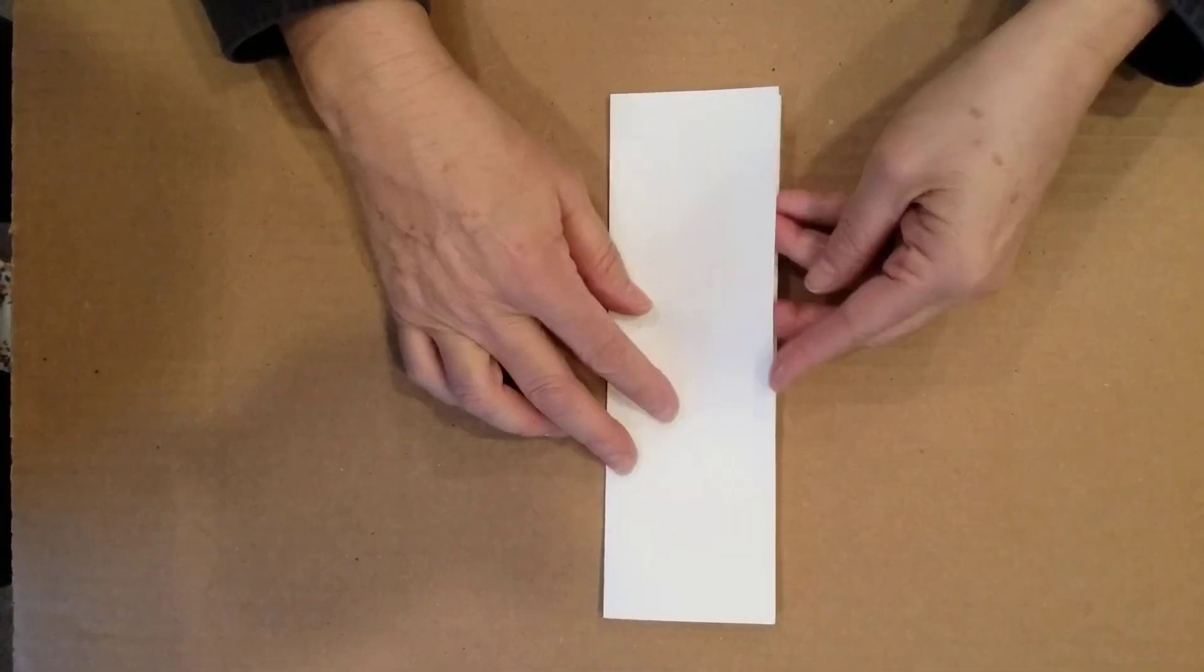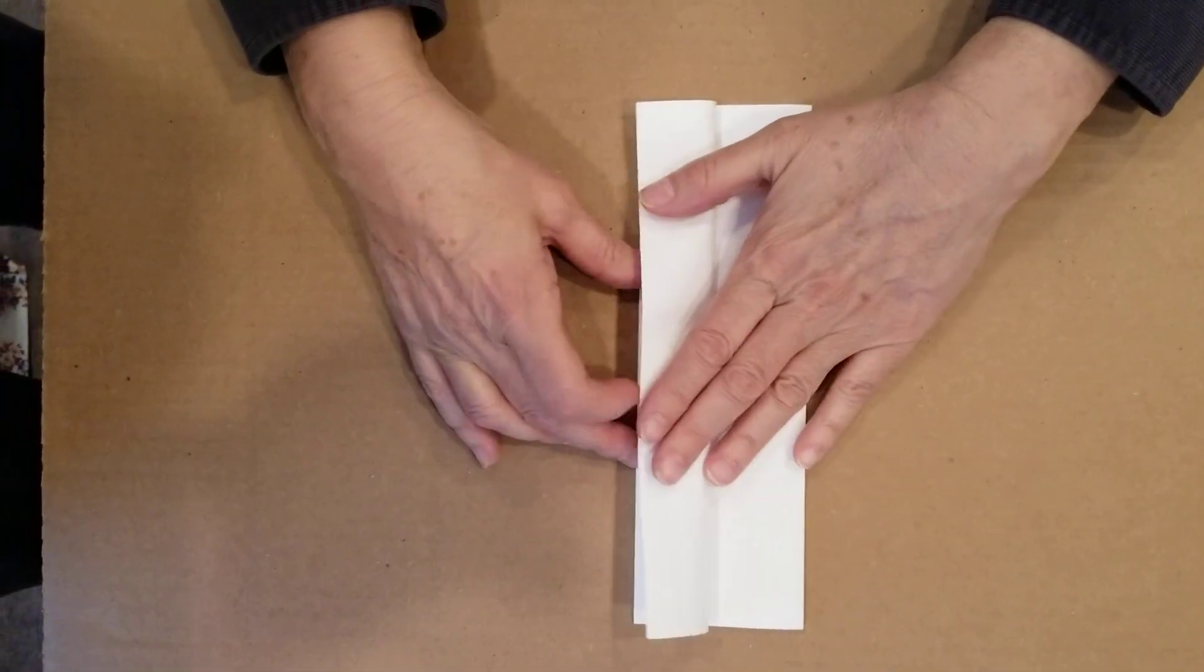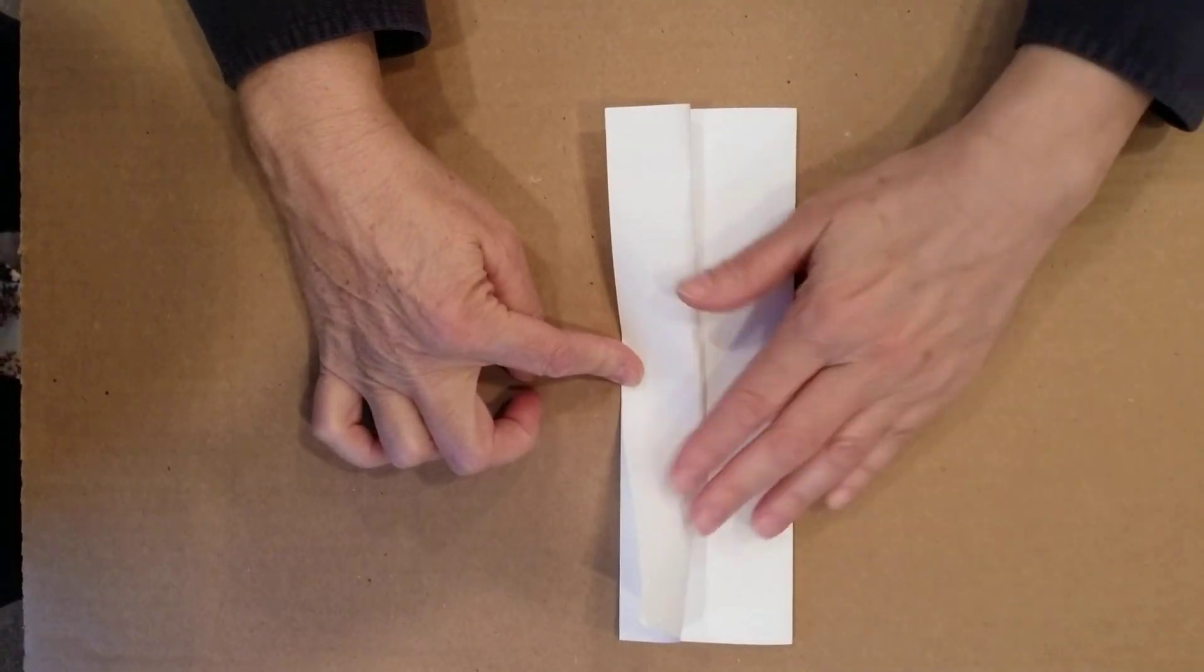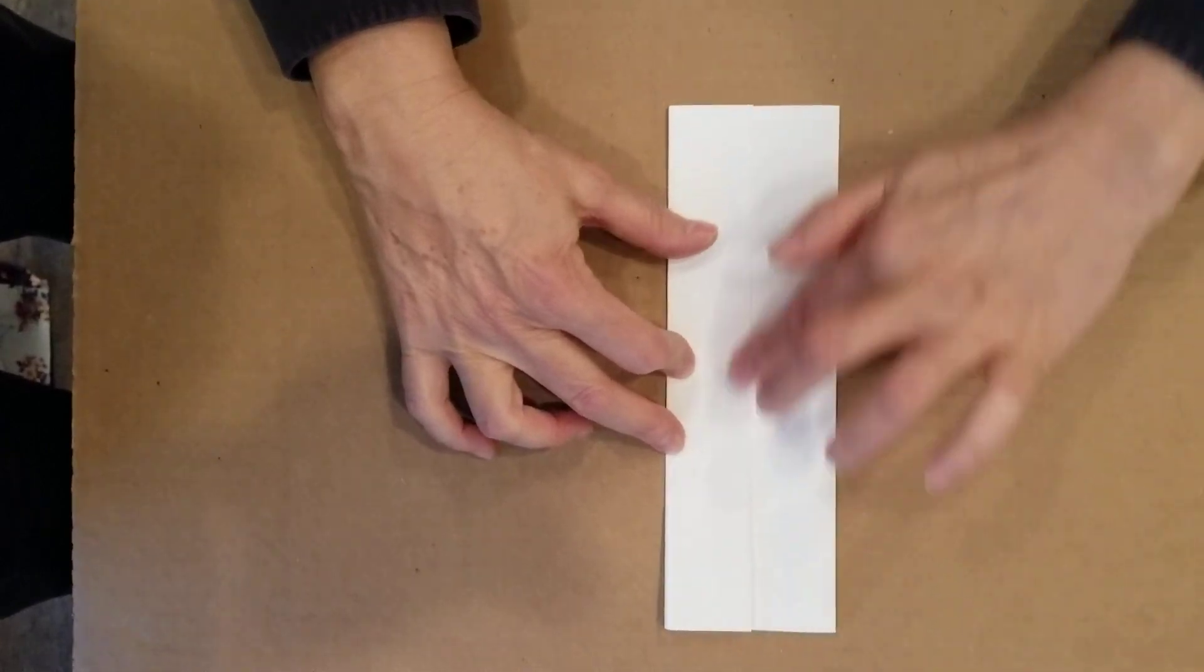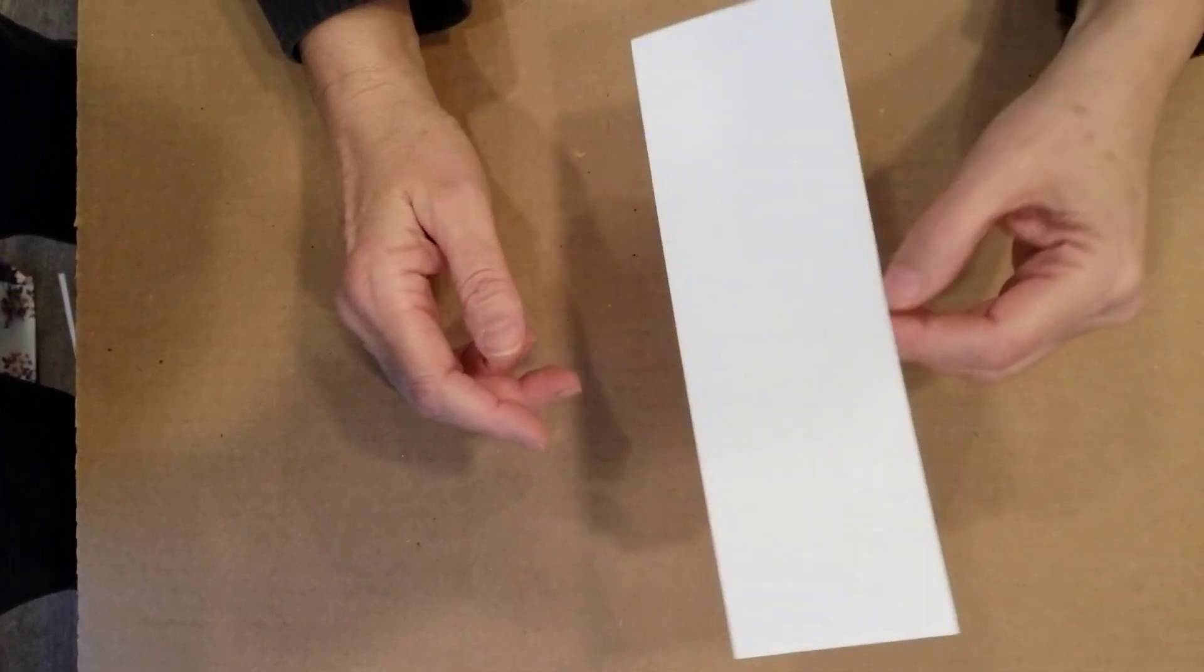So now we're going to take the top flap and we're going to go edge to edge again, winding it up, pressing down when it's in the right place. Okay, turn it over.